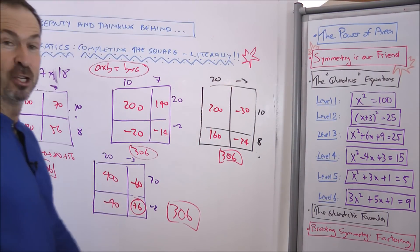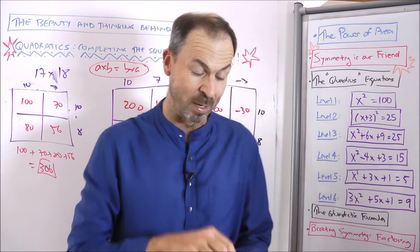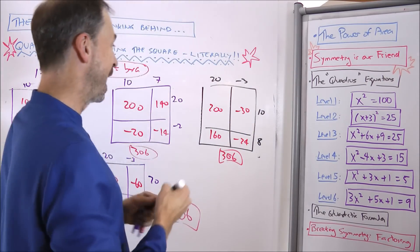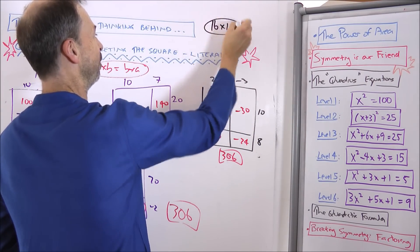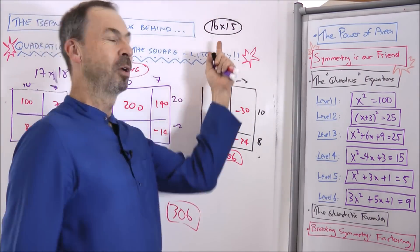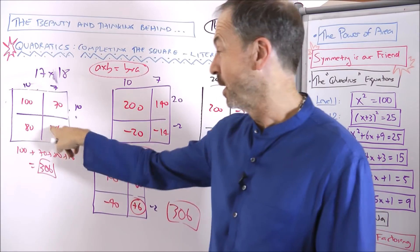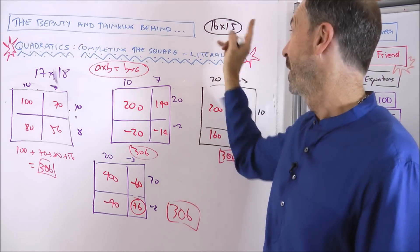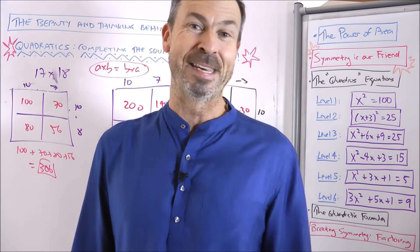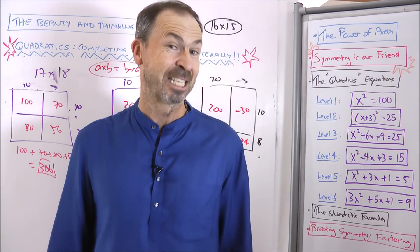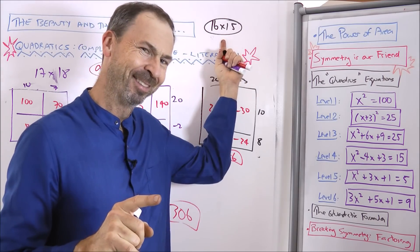In fact, you can prove that negative 4 times negative 5 has to be positive 20 by doing 16 times 15 in four different ways and copying these pictures. I bet you'll convince yourself that negative 4 times negative 5 has to be positive 20.